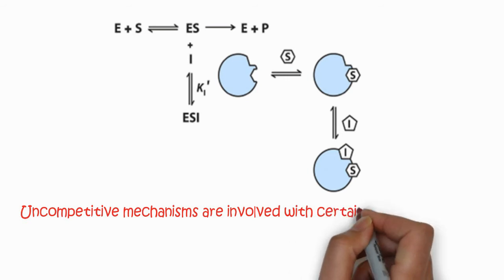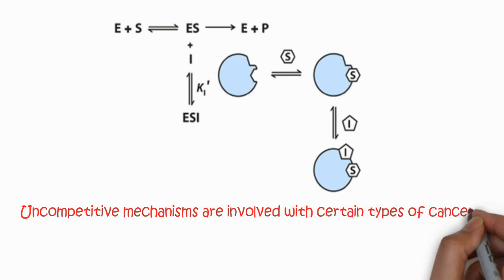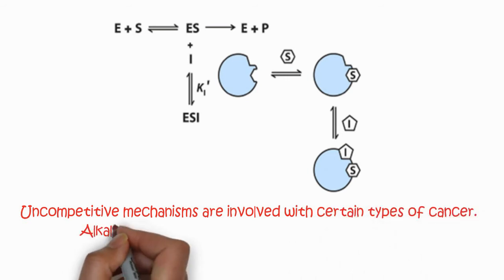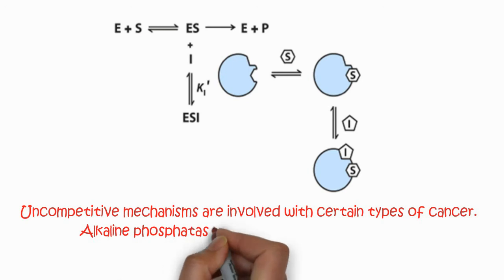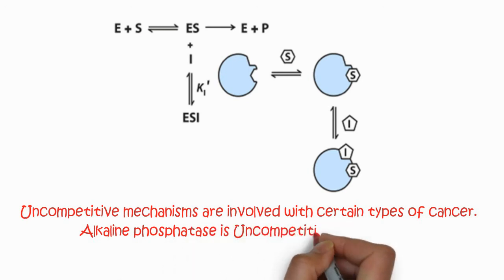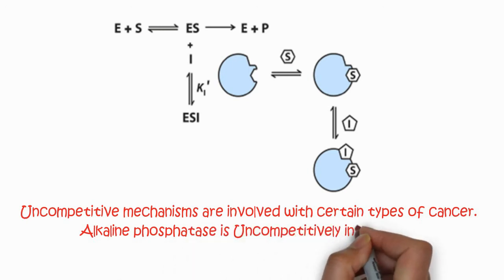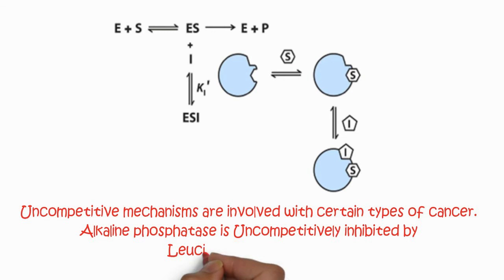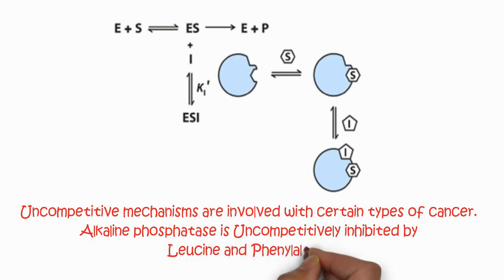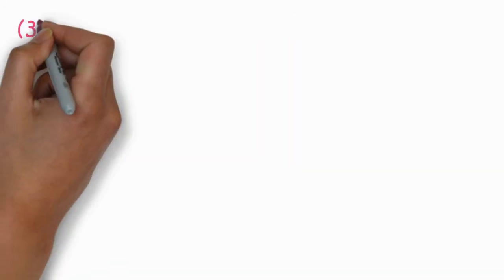The uncompetitive mechanism is involved with certain types of cancer. For example, alkaline phosphatase is uncompetitively inhibited by leucine and phenylalanine, which are amino acids, and they have specific roles in the development and treatment of cancer.